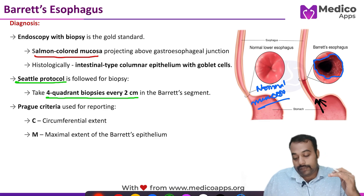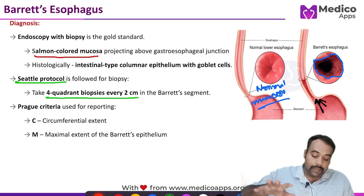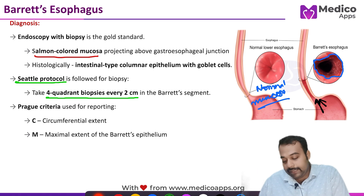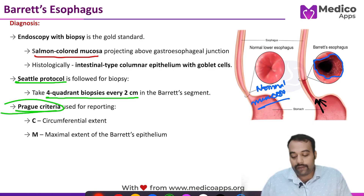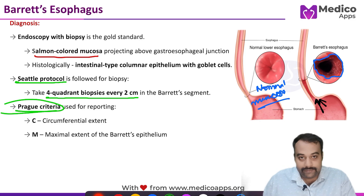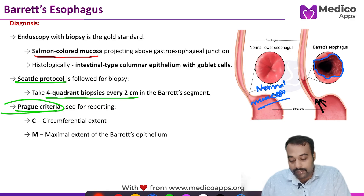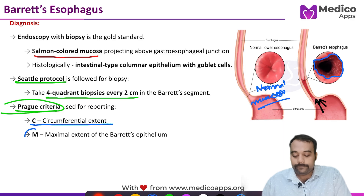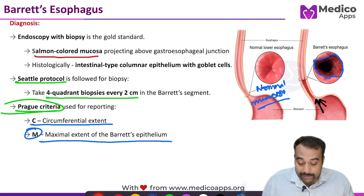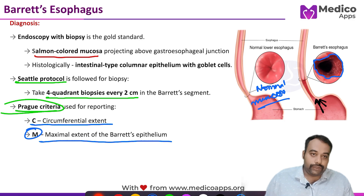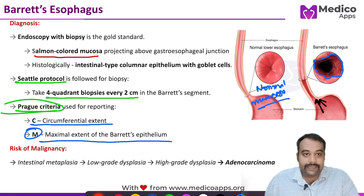After taking the biopsy, reporting must follow the Prague criteria. The Prague criteria use two denominations: C for circumferential extent and M for maximal extent of the Barrett's epithelium. Both must be mentioned in the endoscopy reporting system.